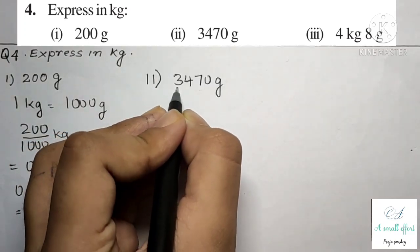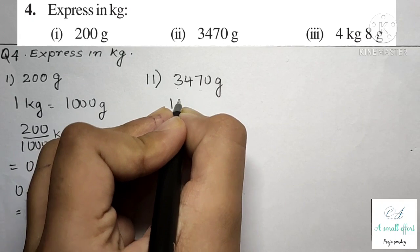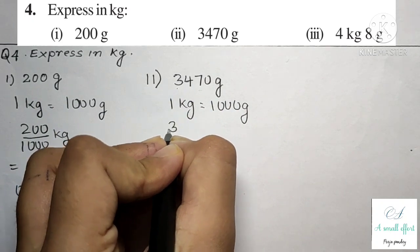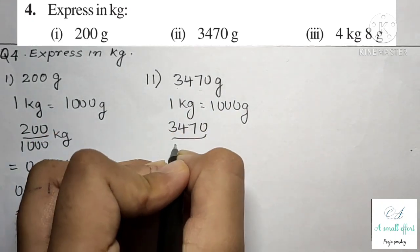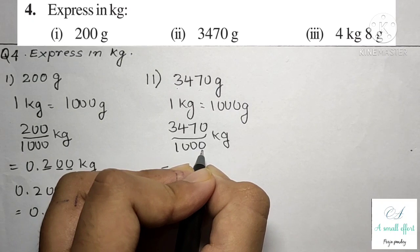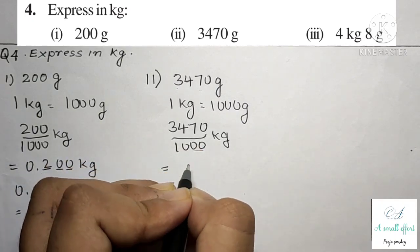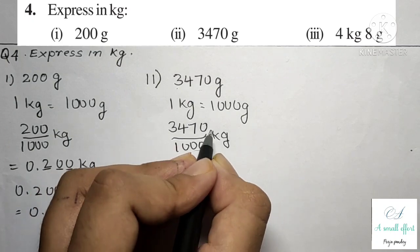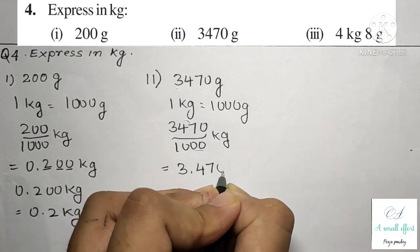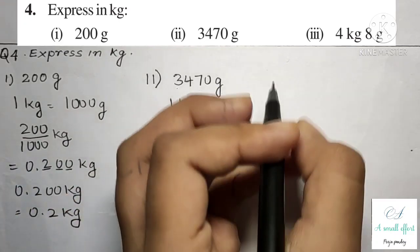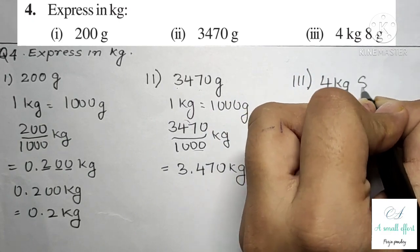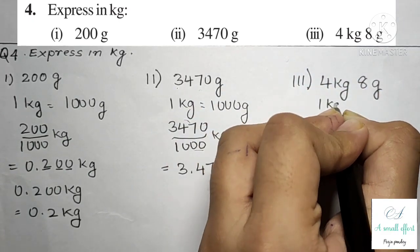Second part is 3470 gram. We know 1 kg equals 1000 gram, so 3470 divided by 1000. There are three zeros and four digits, so the decimal point is three digits from the last — one, two, three — giving us 3.470 kg.